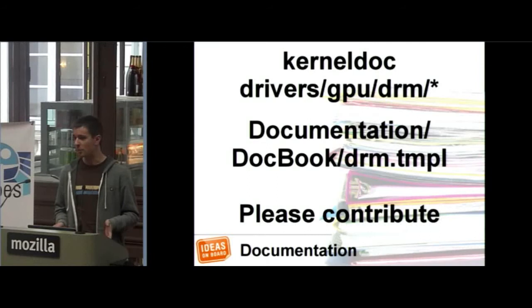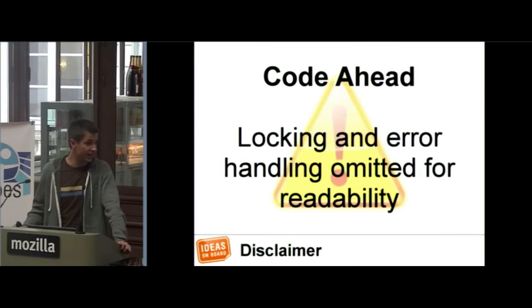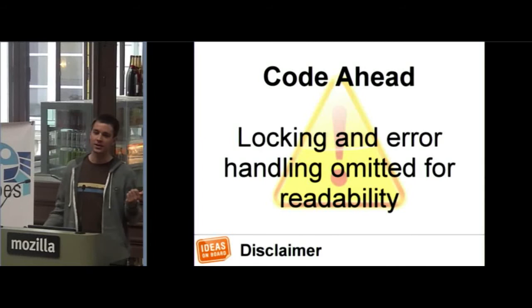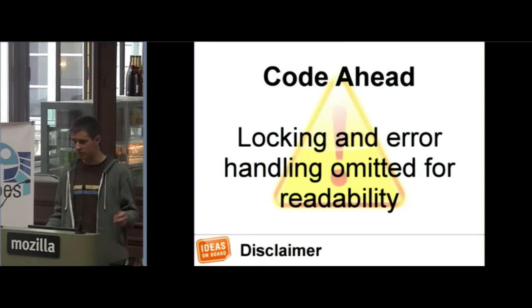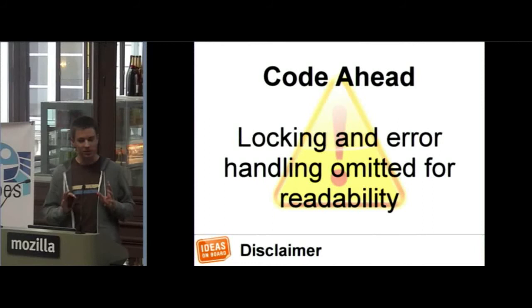I'm going to show you code. I know that's always a bit daunting, and I hope you're familiar with programming — otherwise the next part of the talk will be difficult to follow. There's no error handling in the code because that would fill too many lines on the screen. There's no locking either for the same reason — so don't try this at home; you have to add proper locking and error handling. I just want to show you the overall structure of a graphics driver that implements the atomic API.